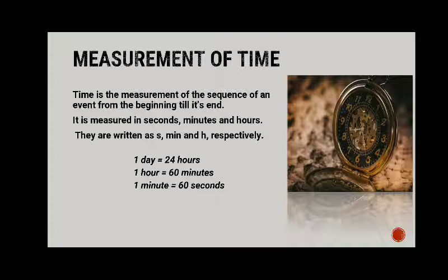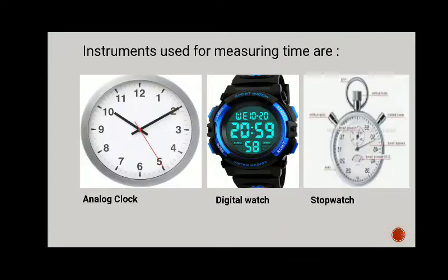One day equals twenty-four hours, one hour equals sixty minutes, and one minute equals sixty seconds. The instruments commonly used for measuring time are the analog clock, digital watch, and stopwatch.